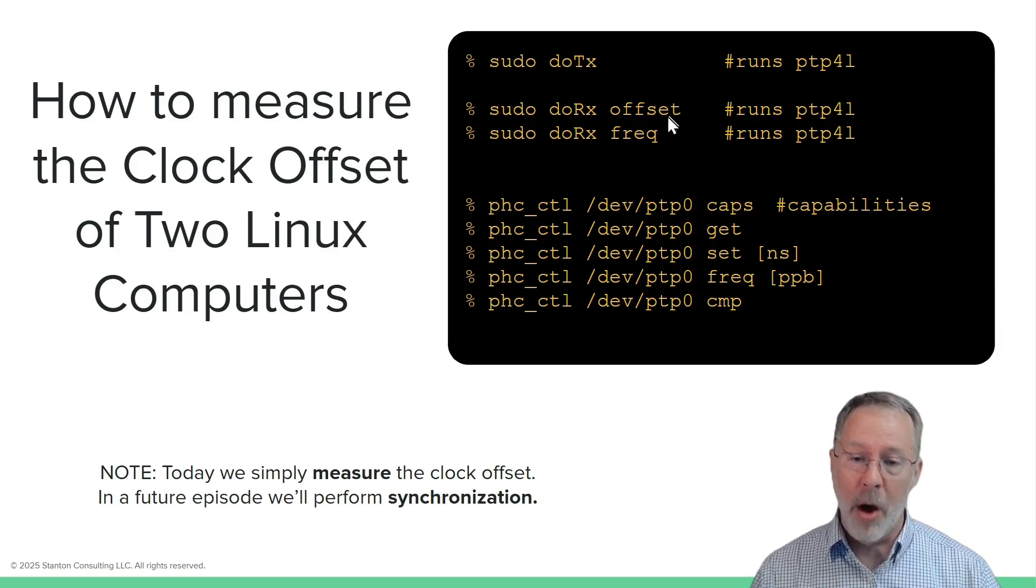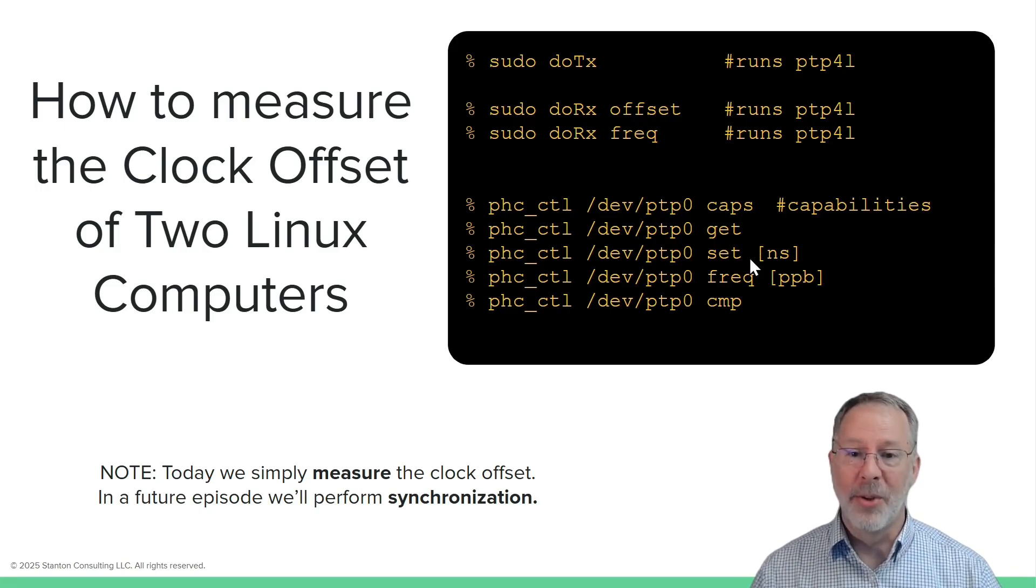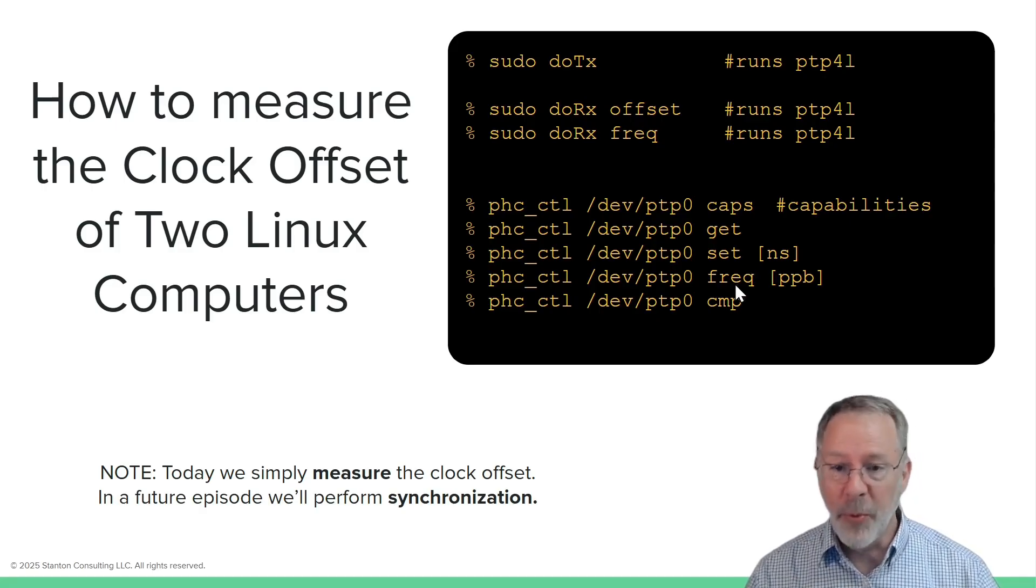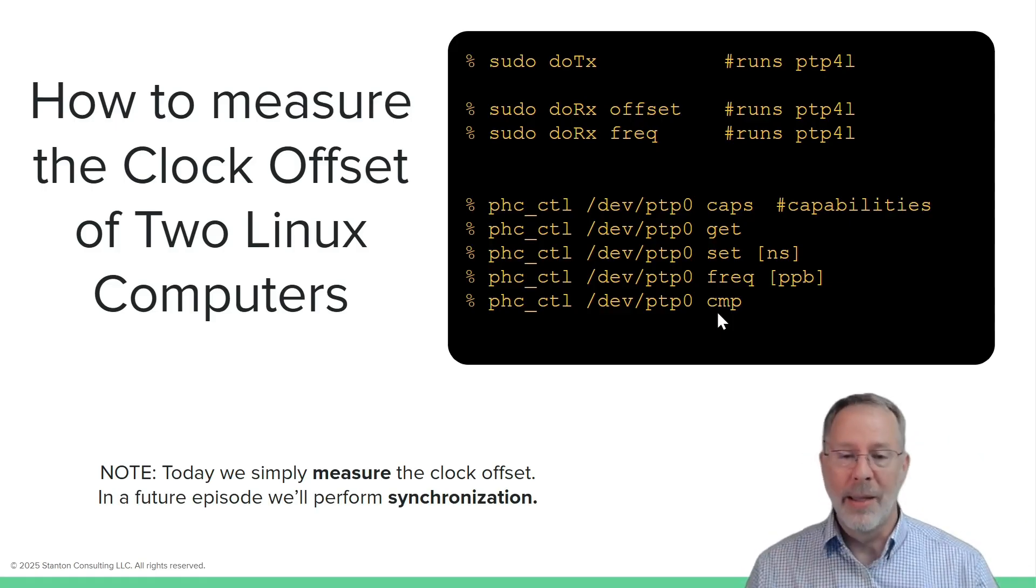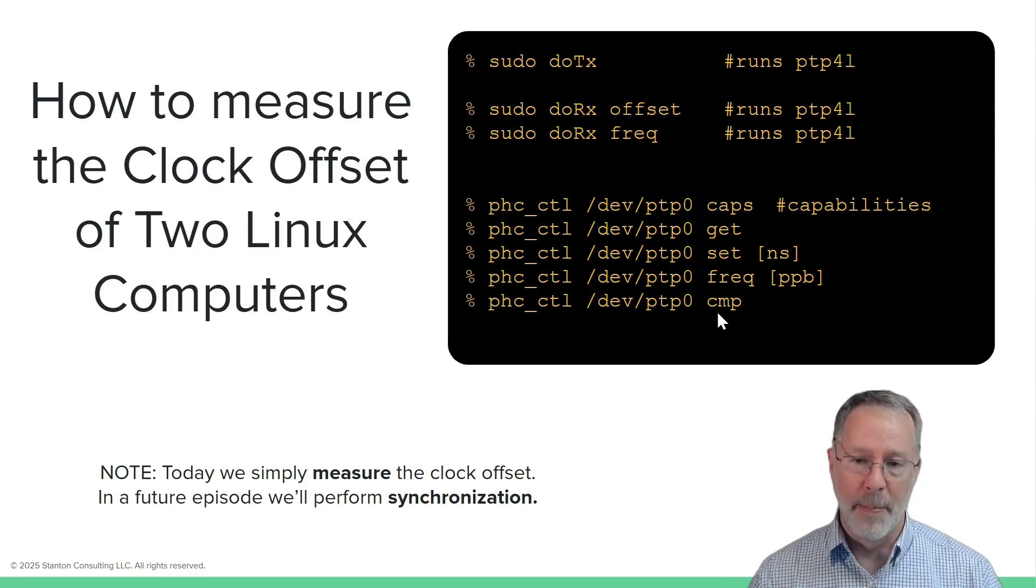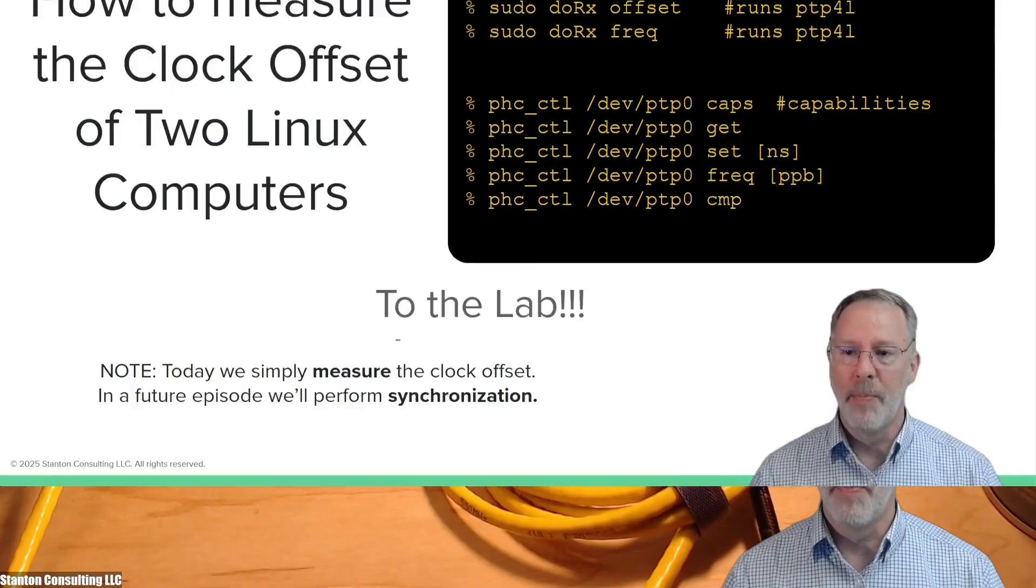And also this PHC down in the Ethernet NIC can be controlled and we can ask for the capabilities. We can ask for the current time in nanoseconds since 1970. We can ask to set the time. We can ask for the frequency, we can set the frequency and we can also compare the CPU's notion of what time it is compared to the NIC's notion of time. So we'll be using most of these in the lab.